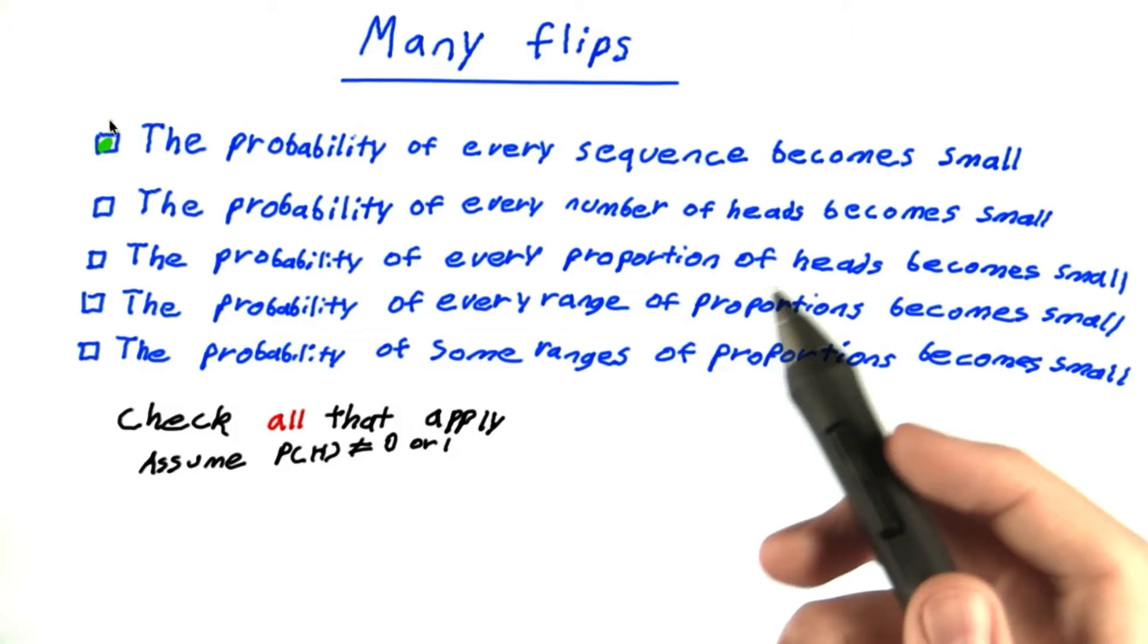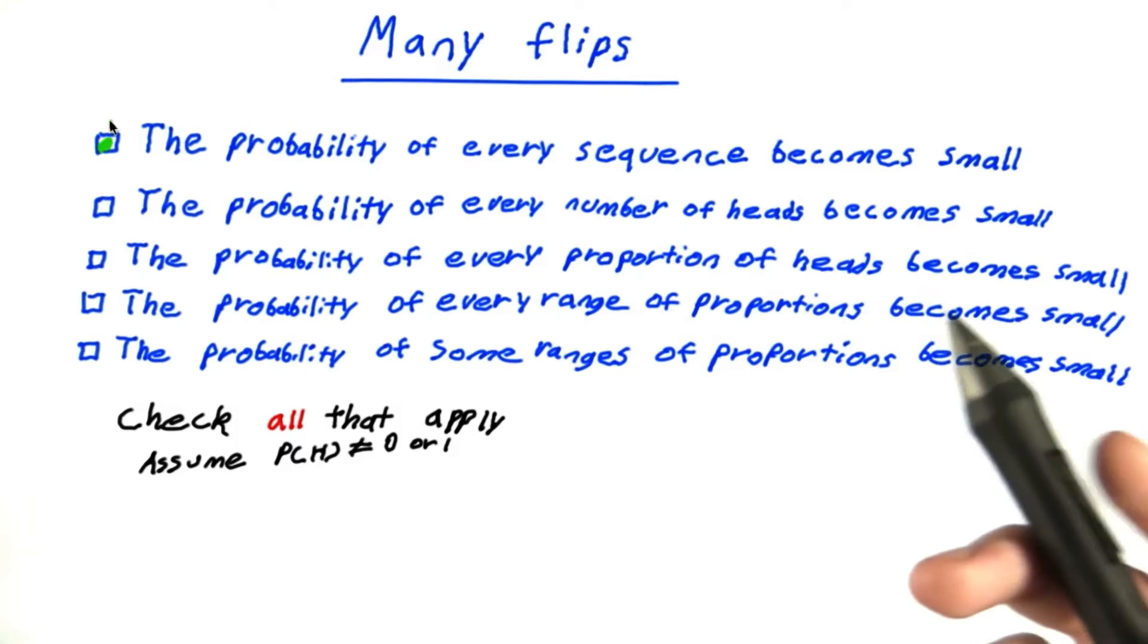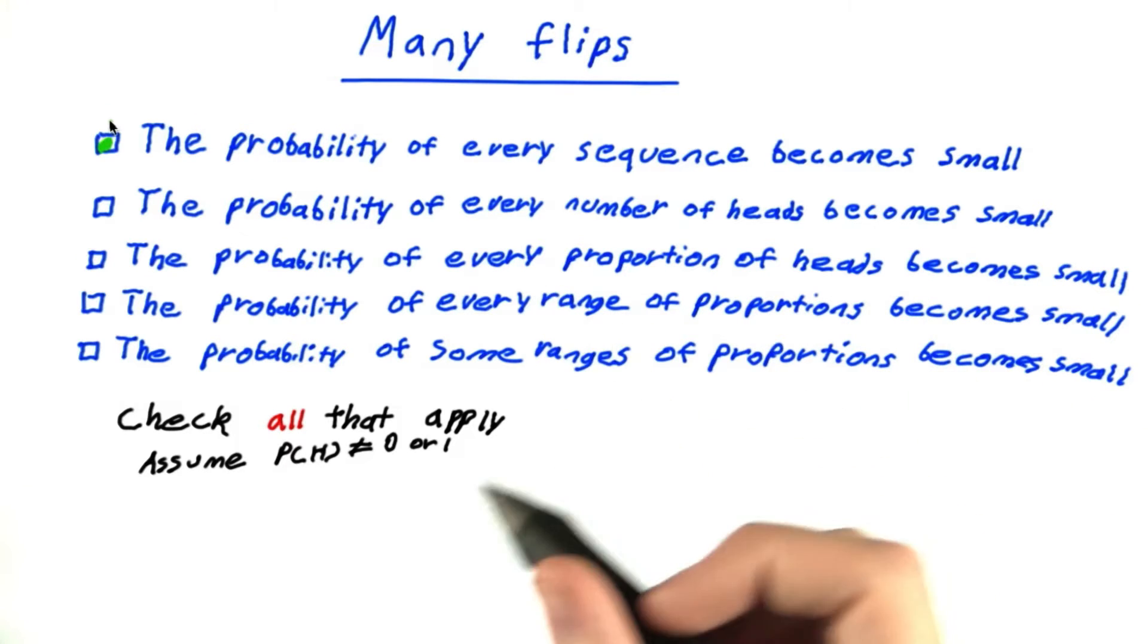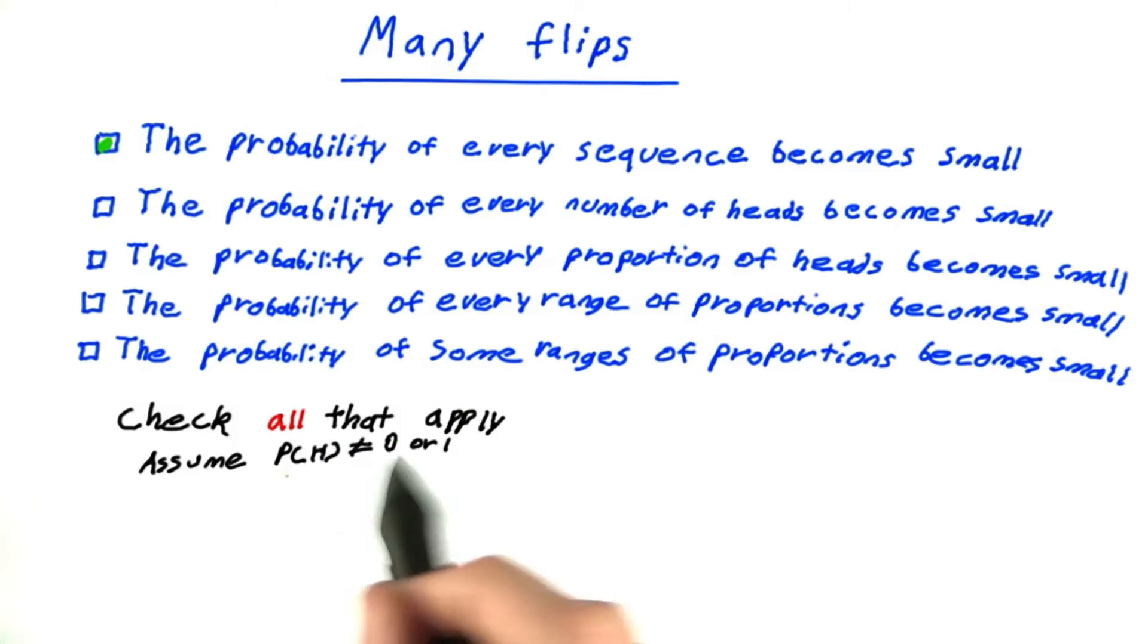They may have varying probabilities, but there are always more of them, so the probability always goes down. You're always multiplying in a number less than 1. That's why this assumption is important.